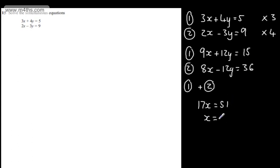So we can see x is 51 over 17, which gives us that x is equal to 3. At this stage, I can substitute back into any of the equations. I'm simply going to substitute into the equation at the top. It really doesn't matter.